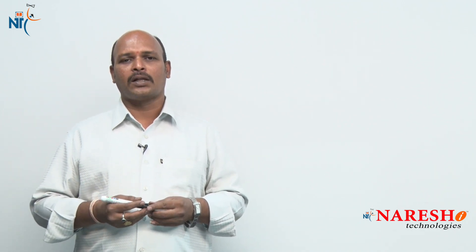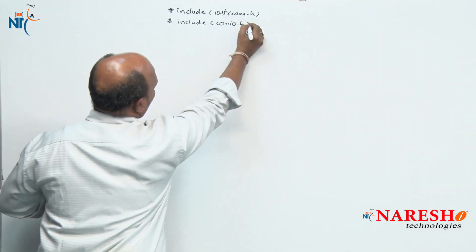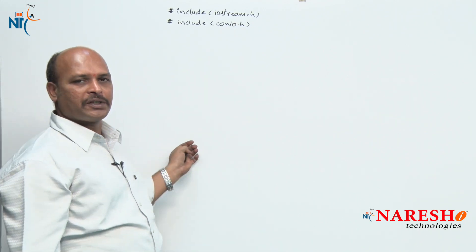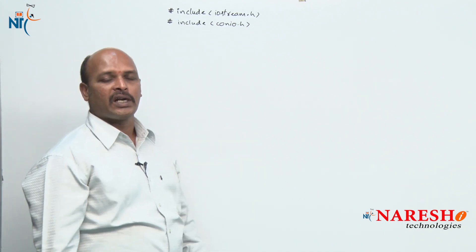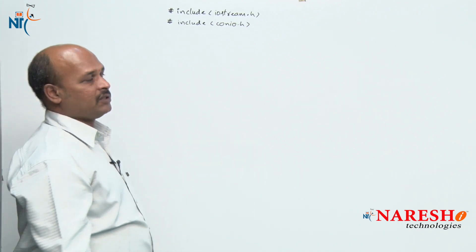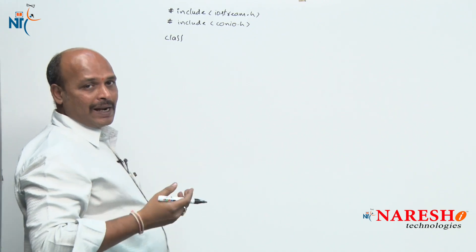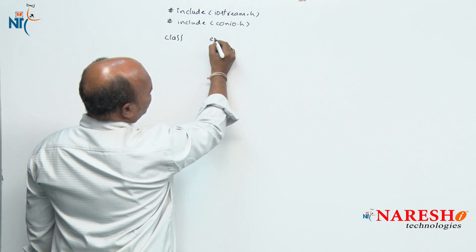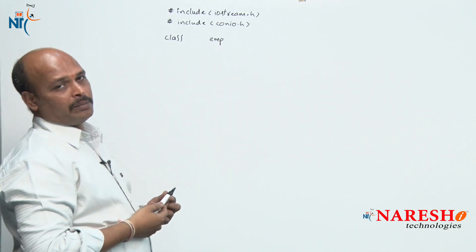The values we are sending to the function are called arguments and the values the function gives back are called return values. I am going to explain with one example how to send and receive values to or from a function. As usual, we include header files: iostream.h for input/output operations and conio.h for screen clear and getch functions. Now I am going to start a class — the class name is employee.